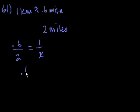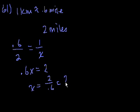You could cross multiply. You could say 0.6 times x is equal to 2, and x is equal to 2 divided by 0.6, which is the same thing as 20 divided by 6. 20 divided by 6 is equal to 3 and 2 sixths, which is 3 and 1 third kilometers.